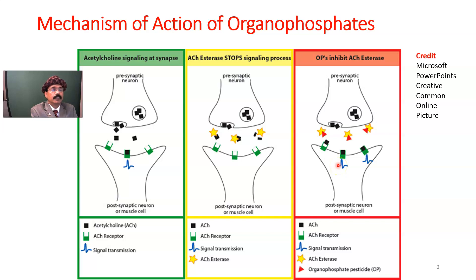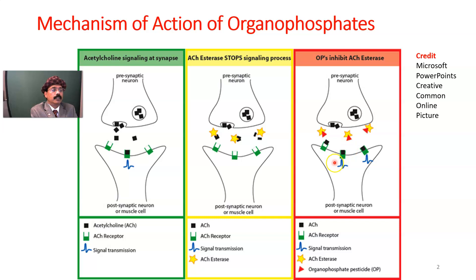We get signs and symptoms of excessive acetylcholine action. Again, we have excessive acetylcholine that transmits more signal than usual. Acetylcholine is not destroyed due to organophosphate poisoning because organophosphate is an acetylcholine esterase inhibitor.